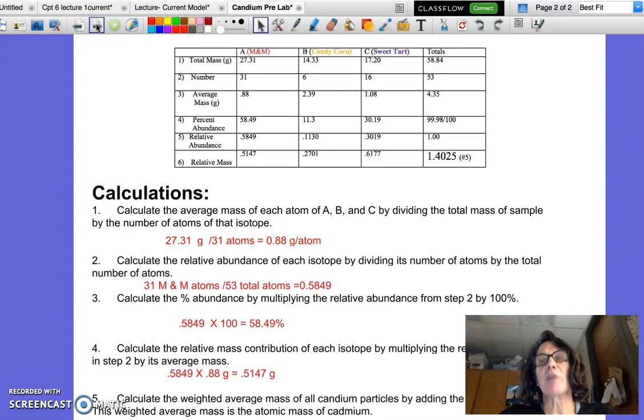As you set up your lab notebook, you're going to record the data table as you see above here, so remember that we've already mentioned that we have the three different isotopes: M&Ms, candy corn, and sweet tarts.